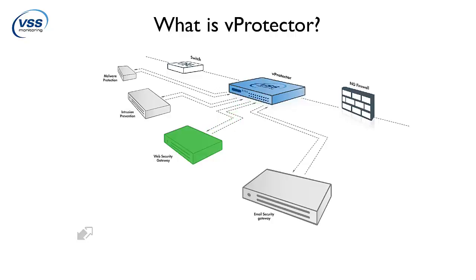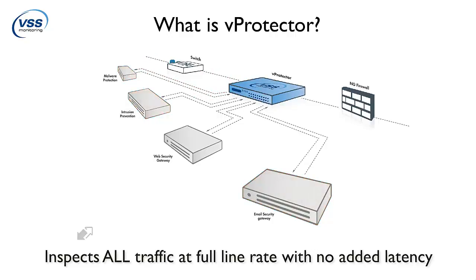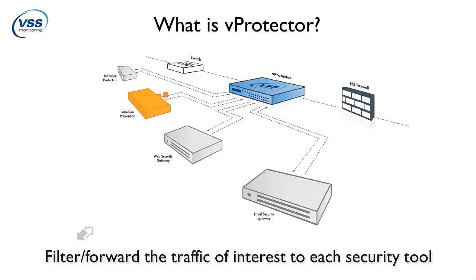vProtector gives you full control of traffic flows, redirecting them between a series of security devices so you can make network and security changes without taking down the network. vProtector inspects and steers each network packet at full 10 gigabit line rates with no noticeable latency added. It also filters application traffic flows between multiple security devices, ensuring only the traffic of interest is directed to each appropriate security device, increasing its efficiency and performance.